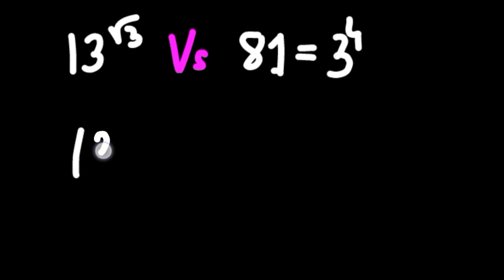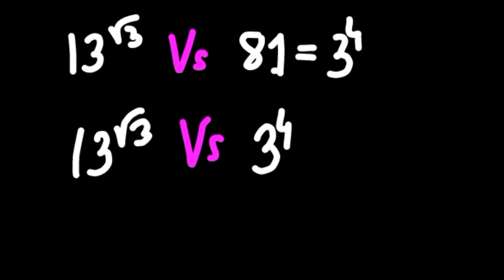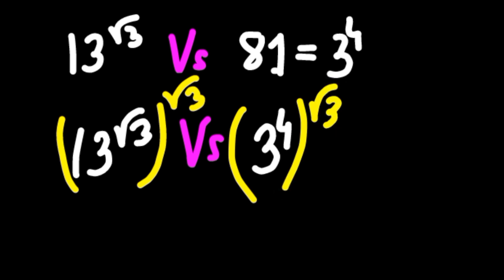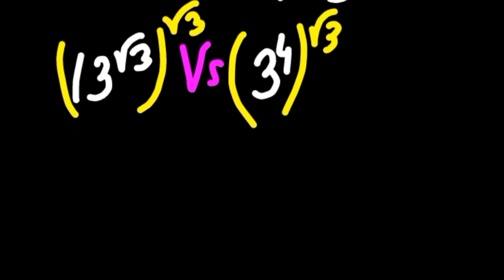In lots of these type of problems we have to cube or square both sides, but in this specific problem we can take root over 3 as power. This turns the comparison into 13 raised to the power 3 and 3 to the power 4 times root over 3.